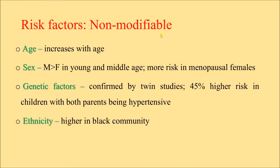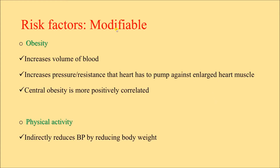Coming to risk factors of hypertension — first, non-modifiable risk factors, which we cannot change. Age: risk of hypertension increases with age. Sex: more common in males than females, and there is high risk among menopausal women. Genetics: confirmed by twin studies; family studies found a 45% higher risk in children with both parents being hypertensive compared to a situation where parents are not hypertensive. Ethnicity: hypertension is more prevalent in the Black community.